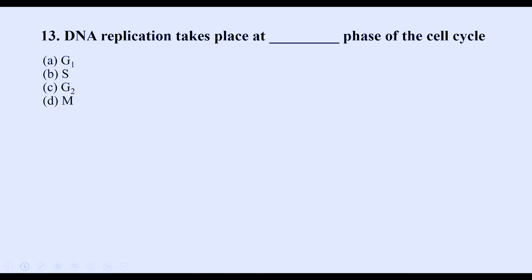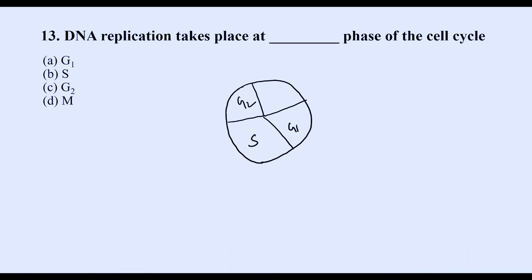DNA replication takes place during which phase of the cell cycle? The cell cycle includes G1, S, G2, and M phases. In the G1 phase the chromatin is unreplicated; during the S (synthesis) phase it gets doubled — that is replication. The correct answer is the S phase.